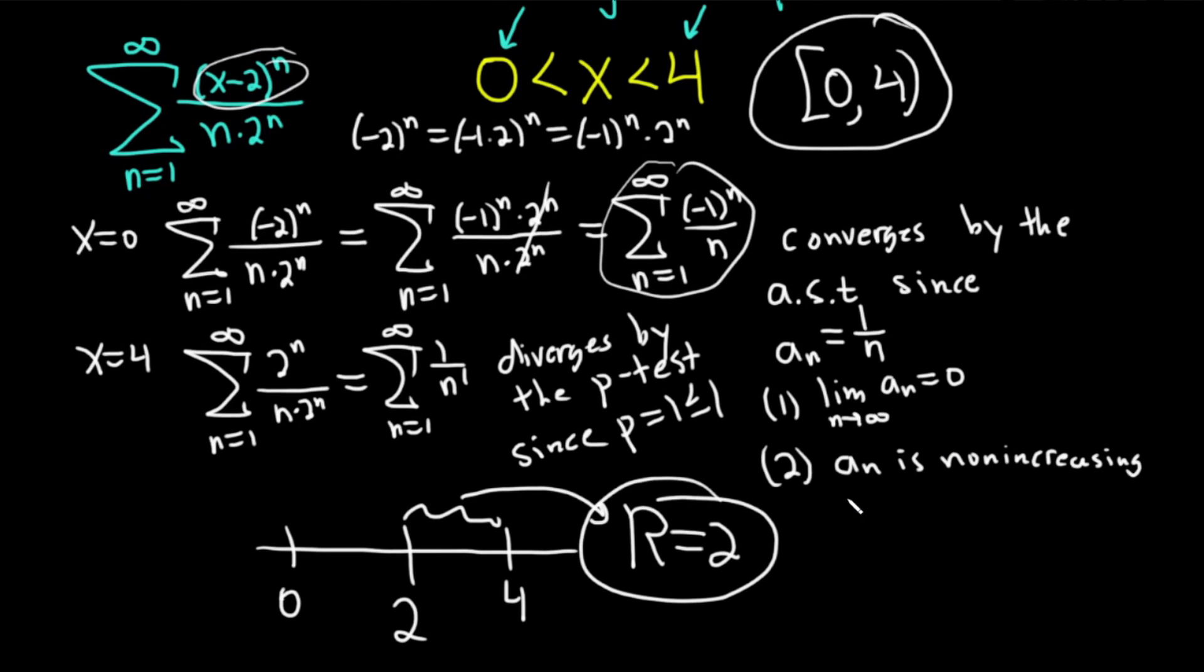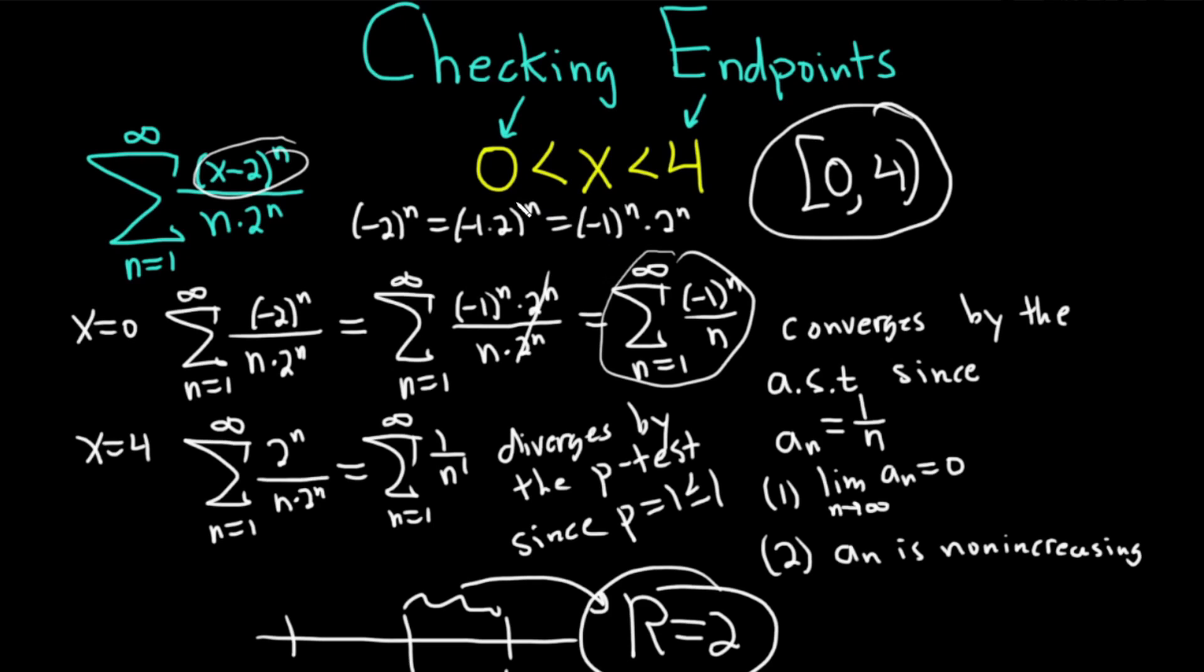And the interval of convergence is 0 to 4. These problems do require a lot of knowledge. In the first part, we started by using the ratio test. Then we ended up with the answer 0 less than x less than 4. And then we had to take each of these numbers, the 0 and the 4, and plug them into this infinite series. Notice there was some algebra here, which is very similar to the algebra we saw at the beginning.